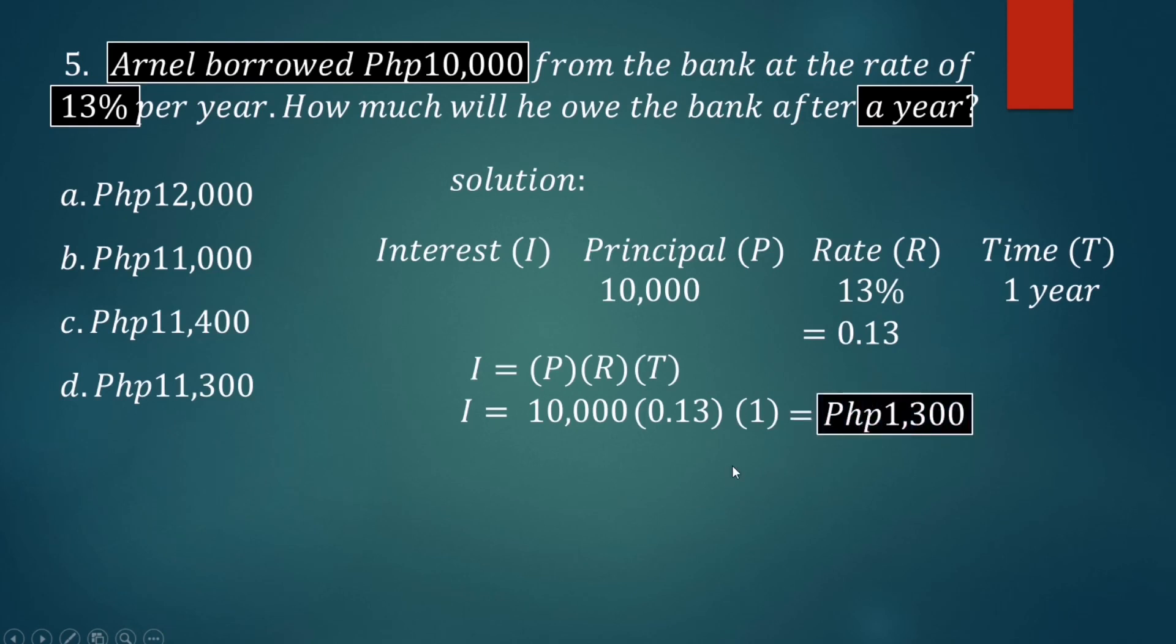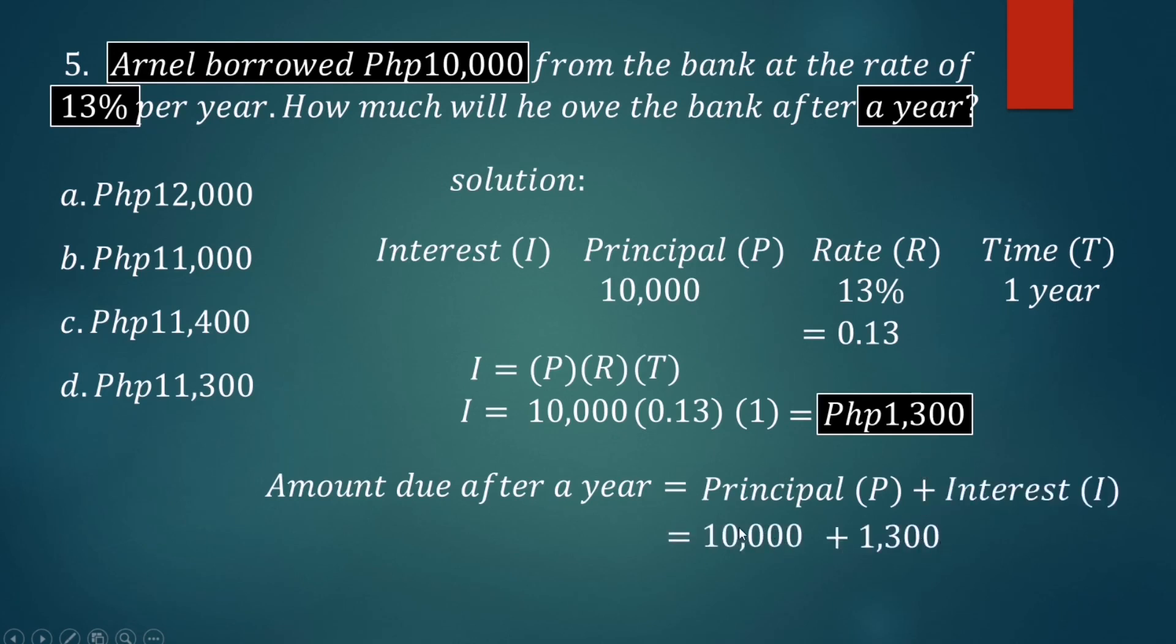Get the product, that would be 1,300 pesos as the interest. The amount due after a year includes the principal, so add the interest: principal 10,000 plus interest 1,300. Get the sum, that would be 11,300 pesos.